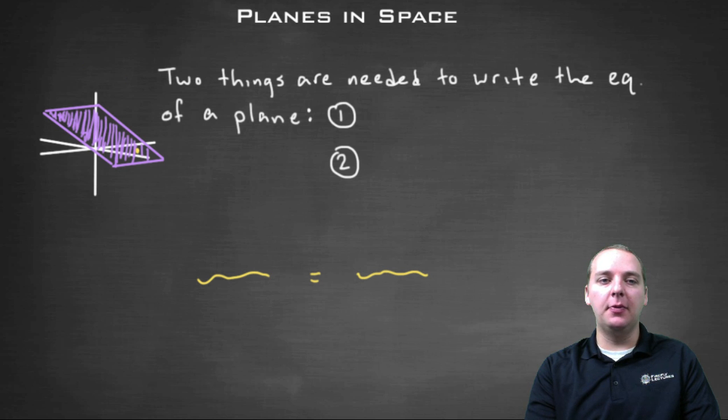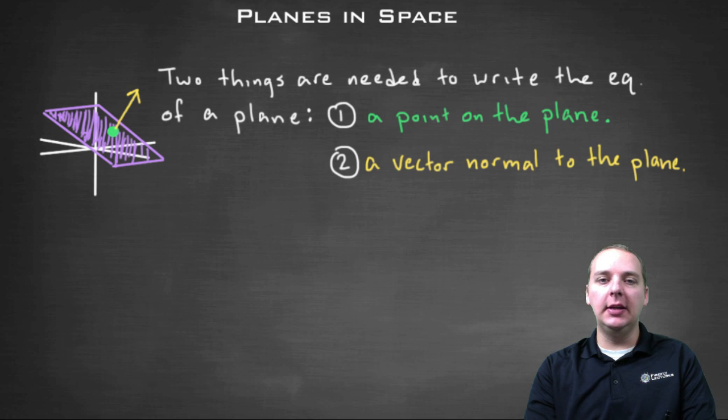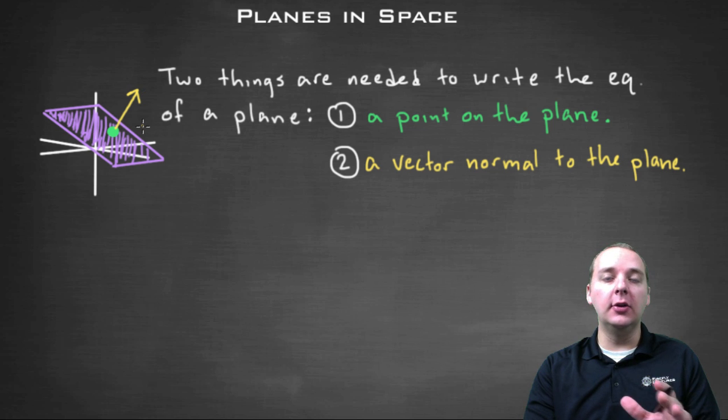And it turns out to find this type of equation you need two things to write this equation down. The first thing you need is a point in the plane. It doesn't matter what point it is, but some point that is in your plane. And the second thing you need is a vector that's normal to the plane. What normal means is it meets it at a right angle, a ninety degree angle.